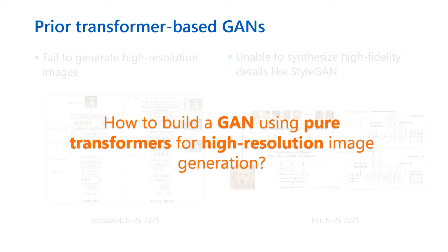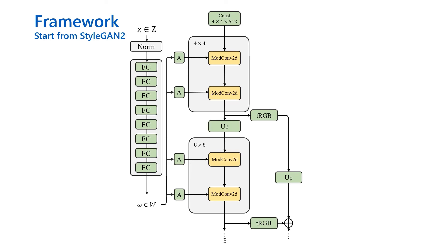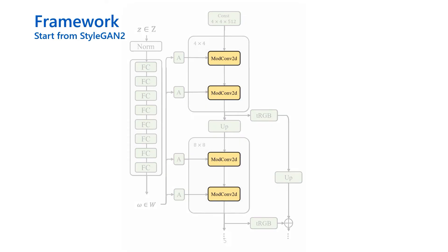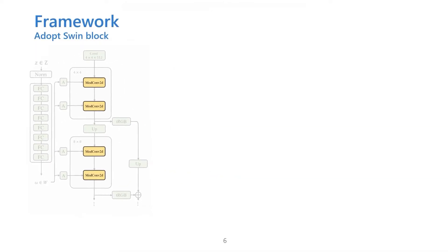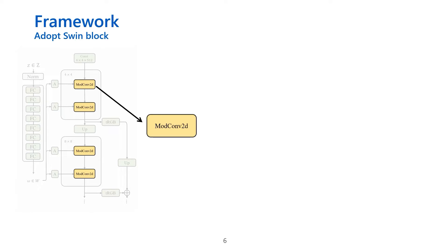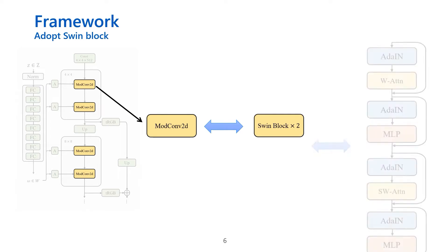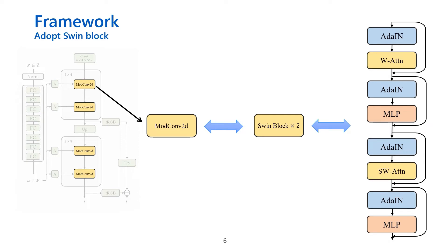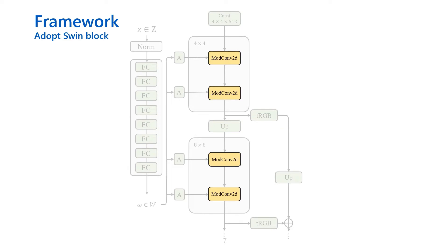Let me introduce our approach to build StyleSwin. We start our exploration based on the Conv-based StyleGAN, which uses a style-based generator. To build a transformer-based generator, a naive solution is to replace the modulated Conv2D with a transformer block. However, directly computing self-attention is unaffordable in high-resolution synthesis. To strike a balance between computational efficiency and modeling capability, we leverage Swin Transformers as our basic building block, replacing a single modulated Conv2D layer with two successive Swin blocks.